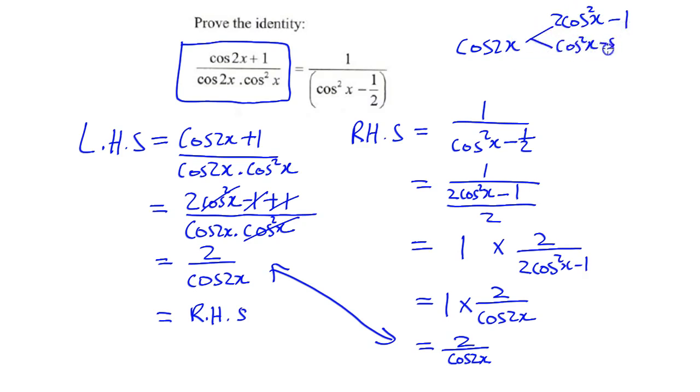cos squared x minus sin squared x, and 1 minus 2 sin squared x. The one we want to choose is normally to cancel off a constant or to keep it within the same trig ratio. If we're not sure which direction to go, see if you can simplify the right hand side, and eventually you'll be able to make the left hand side equal to the right hand side.